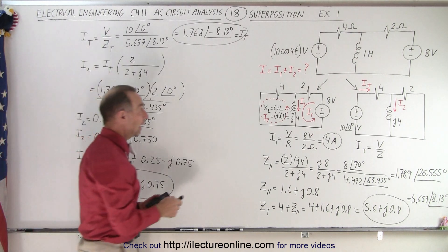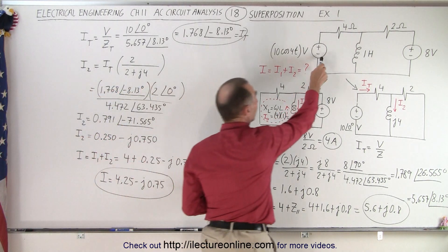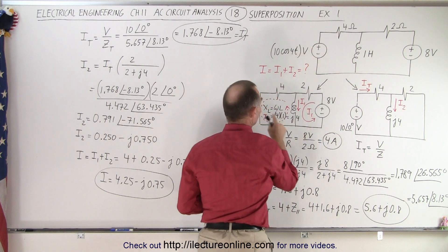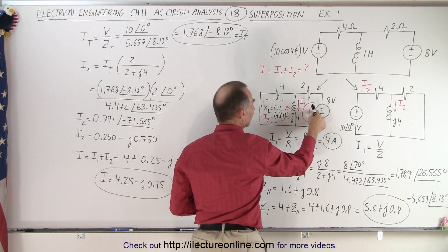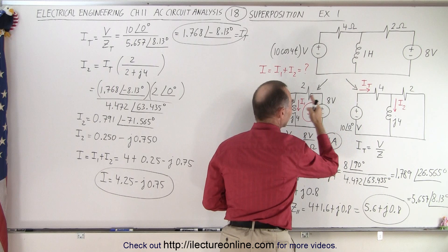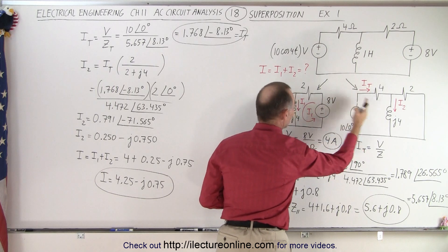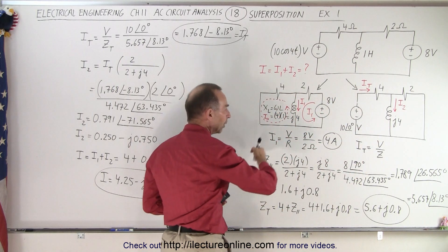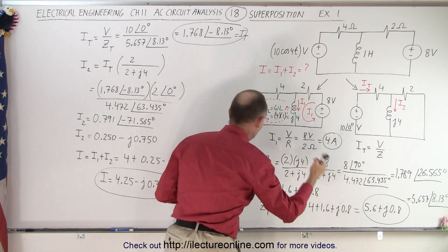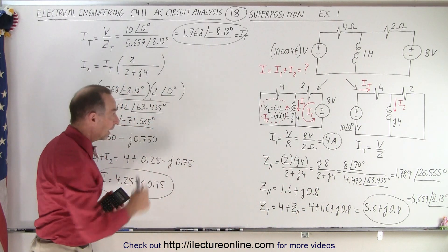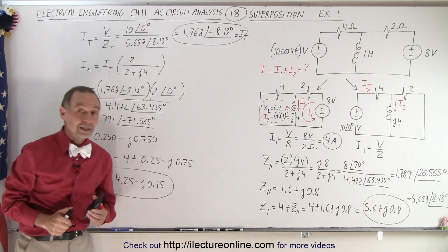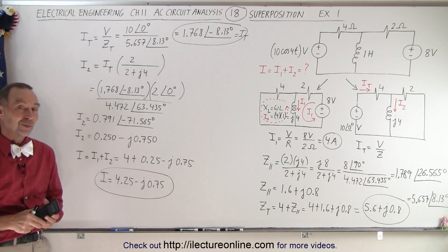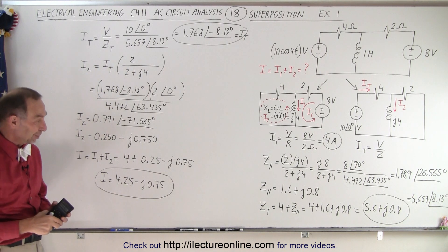We simply had two voltage supplies. We rewrote the circuit with only one of the supplies in each version, calculated the current separately through the inductor by finding I1 and I2, then combined the two to get the current through the inductor. That is how it's done — it's almost like magic, but it works.